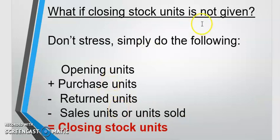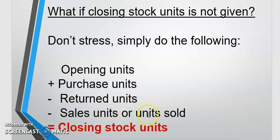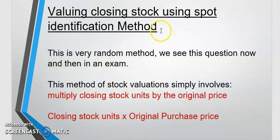What if closing stock units is not given? Take the opening units plus what you purchased, minus any units returned, and minus any units that you sold — that will give you your closing stock units. For the spot identification method: take closing stock and multiply it by the original price you paid — the purchase price. That's how you get closing stock using spot identification method.